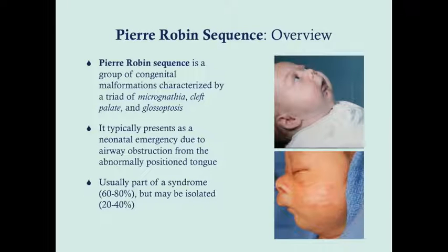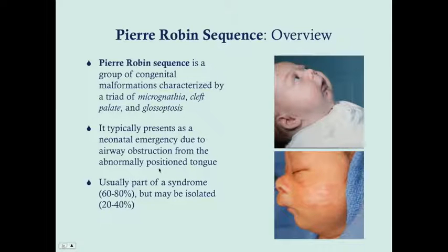Pierre Robin sequence is a group of congenital malformations — really a triad — characterized by micrognathia, which is a small chin; cleft palate, which is an opening of the palate in the mouth; and glossoptosis, which is a retro-positioning of the tongue. Typically this presents as a neonatal emergency because of airway obstruction caused by the abnormally positioned tongue, which can flip back and block the airway.